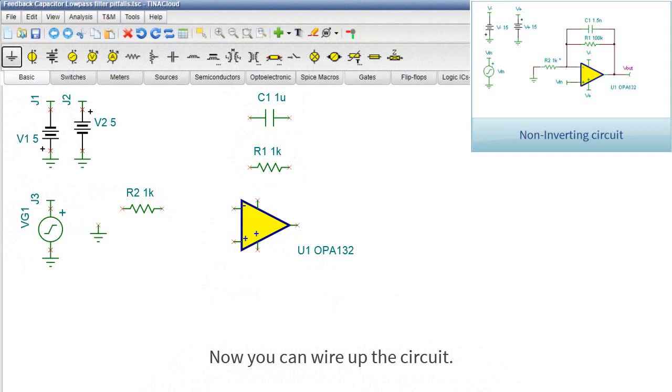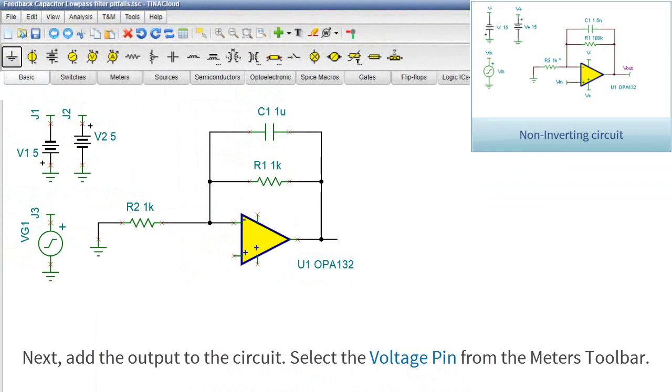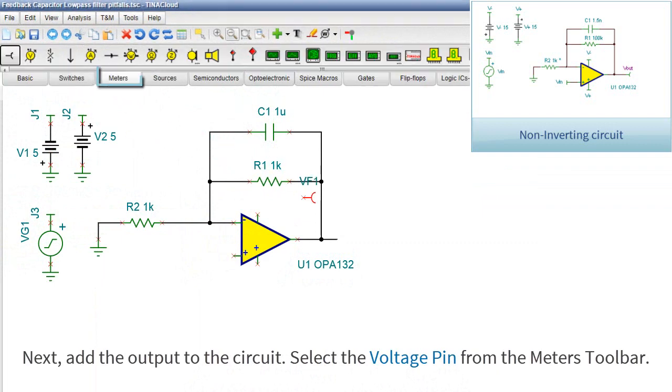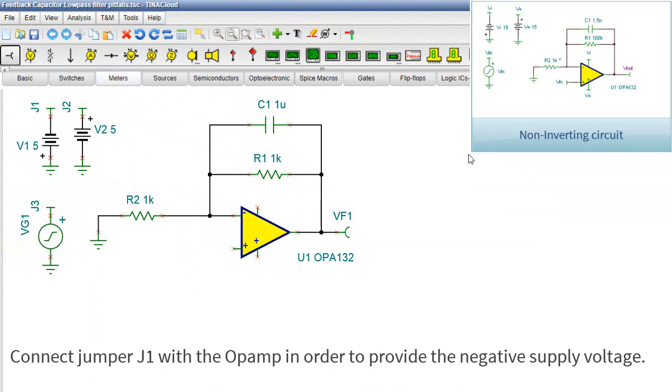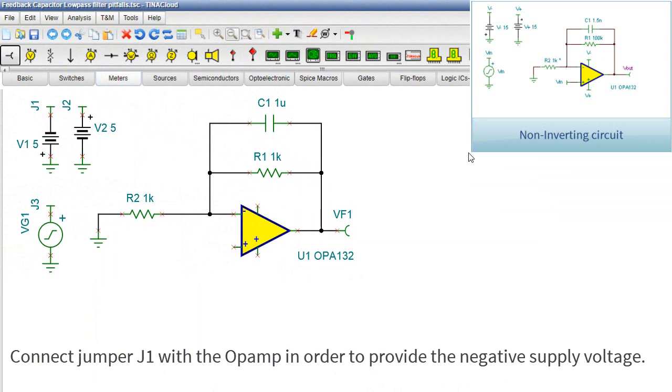Now you can wire up the circuit. Next, add the output to the circuit. Select the voltage pin from the meters toolbar. Connect jumper J1 with the op-amp in order to provide the negative supply voltage.